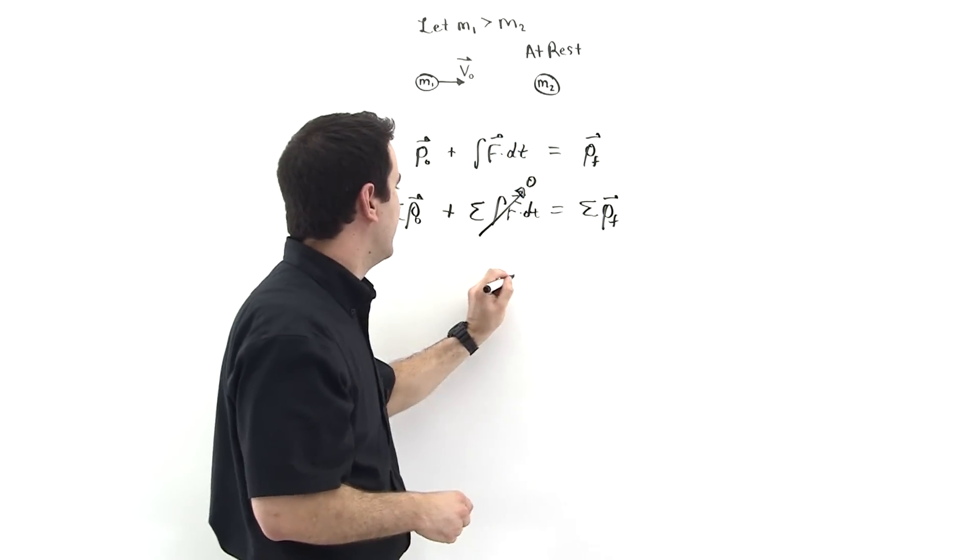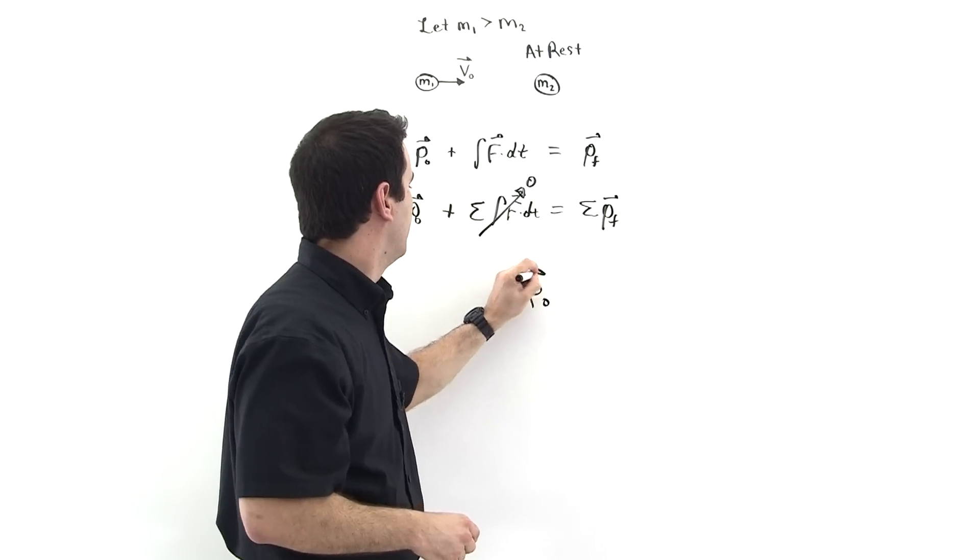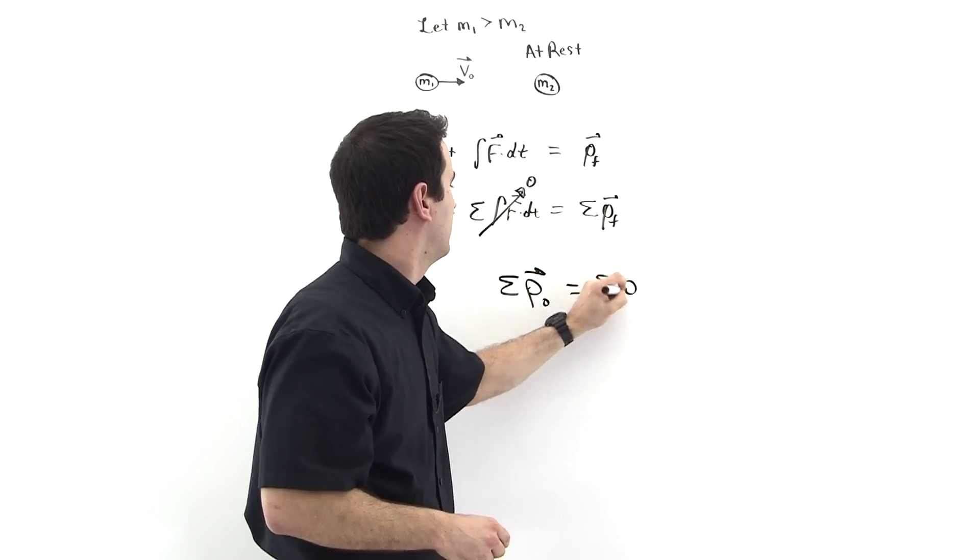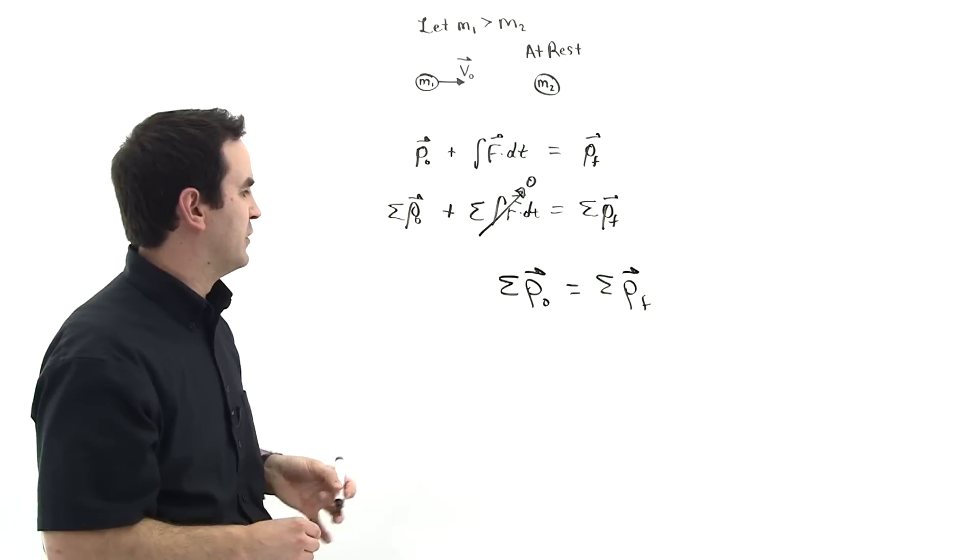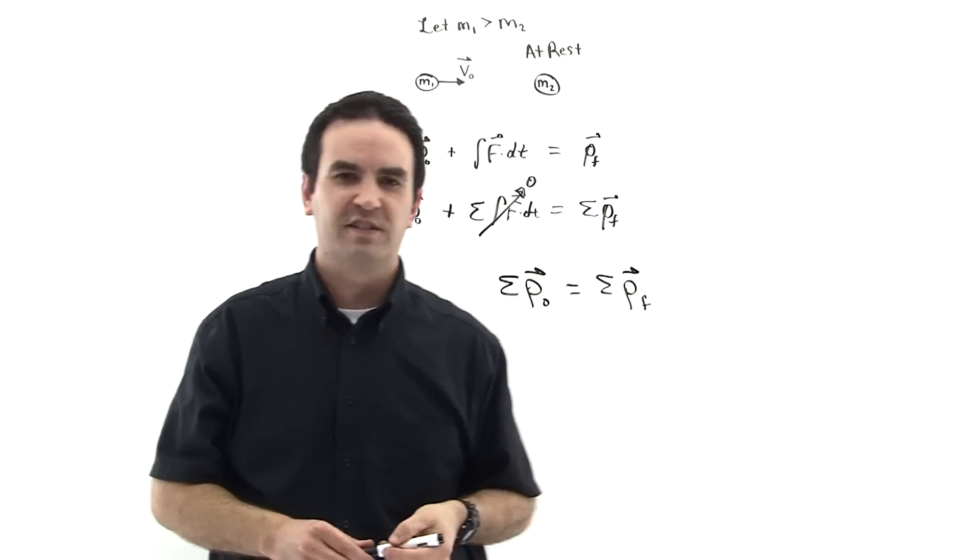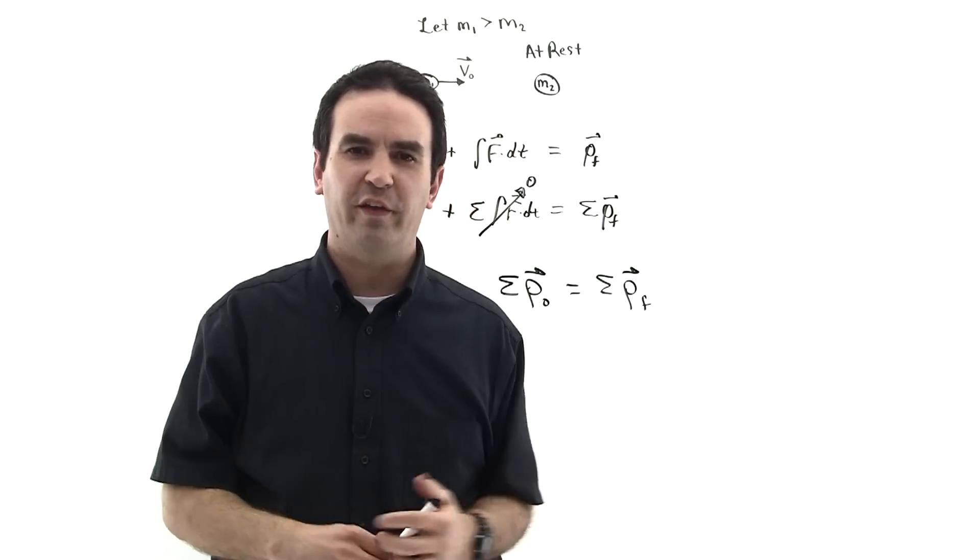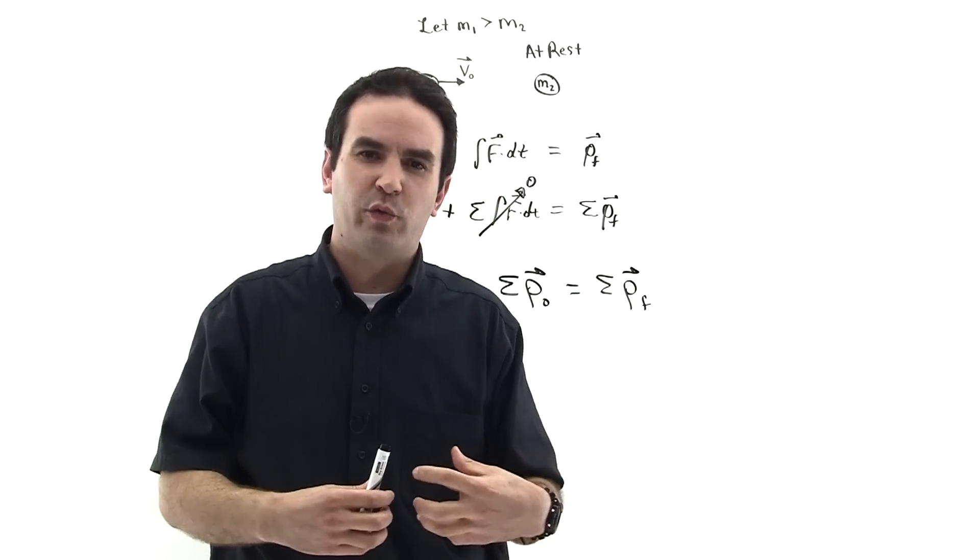So we see, this is the infamous conservation of momentum. Sigma p-zero is equal to sigma p-final, and this will be a powerful result that we can use to solve for the velocities of objects, things banging into one another, because all those forces, those things that are interacting with one another, those are internal forces.